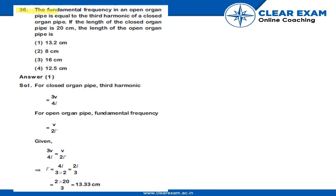Question number 36: The fundamental frequency in an open organ pipe is equal to the third harmonic of a closed organ pipe. If the length of the closed organ pipe is 20 centimeters, the length of the open organ pipe is: